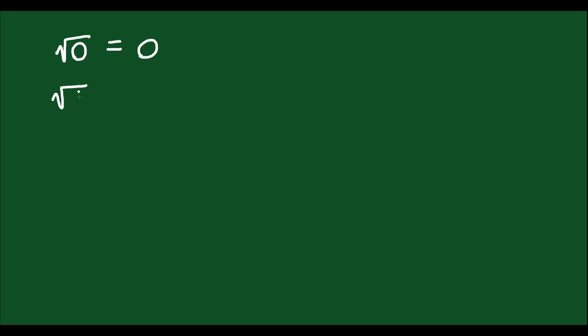Part of the foundation of working with radicals is knowing what the square roots of numbers are. So if I asked you what's the square root of 0, you should be able to tell me the answer is 0. Square root of 1 is 1. Square root of 4 is 2. Square root of 9 is 3 — because 3 times 3 is 9, 2 times 2 is 4, 1 times 1 is 1. In other words, 3 squared is 9, 2 squared is 4, 1 squared is 1, and so on. You should know square roots up to about 10, 12, or 20 — that's usually a good place to be.